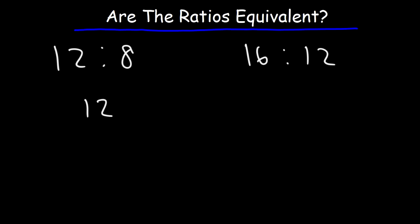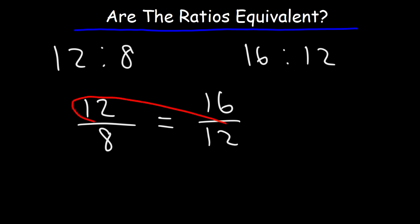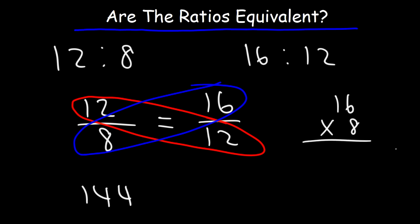Now, let's use the other technique. Let's write the two fractions and put an equal sign between them. So let's begin by multiplying 12 by 12. 12 times 12 is 144. Now, what about 8 times 16? Well, let's use the old-fashioned multiplication. 8 times 6 is 48, so we'll write the 8, carry over the 4. 8 times 1 is 12, plus 4, so that gives us 128. 128 does not equal 144. So the two ratios are not equivalent to each other.